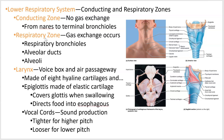Your lower respiratory system picks up at your larynx. This is misleading — your lower respiratory system includes part of the conducting zone and all of the respiratory zone. The conducting zone goes from your nares, your nostrils, all the way down to structures called terminal bronchioles. Conducting means that the air just moves from one place to the next, and there's no gas exchange.